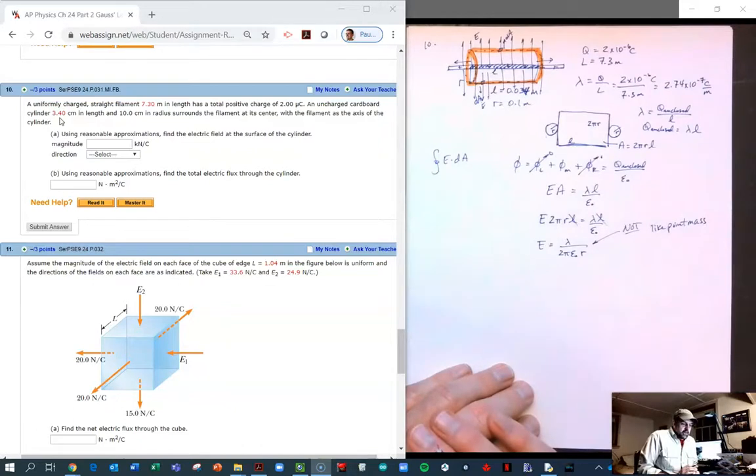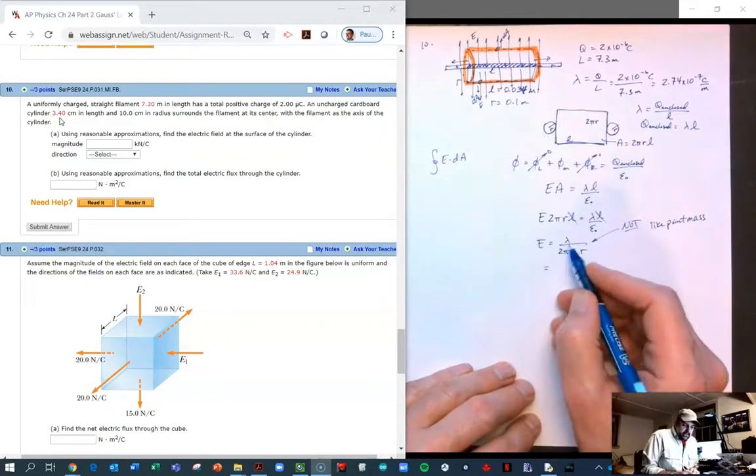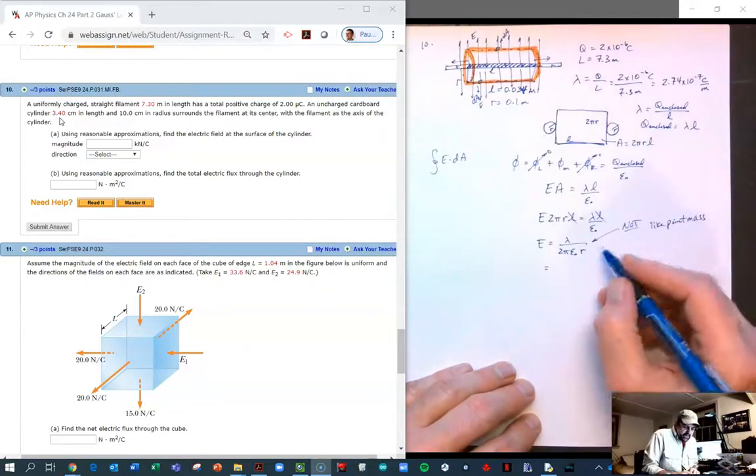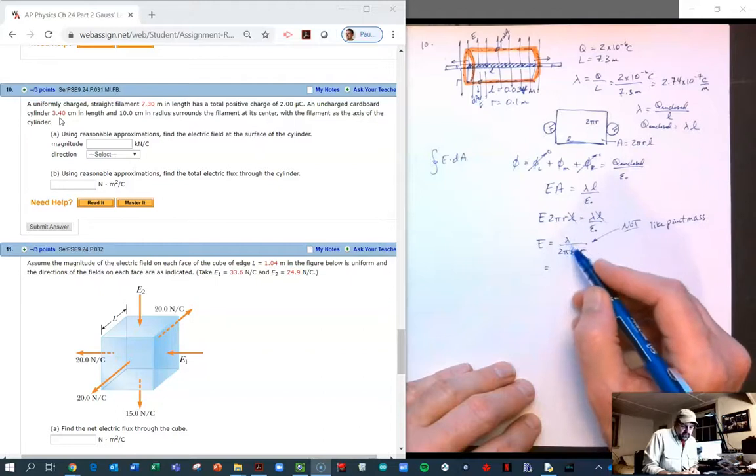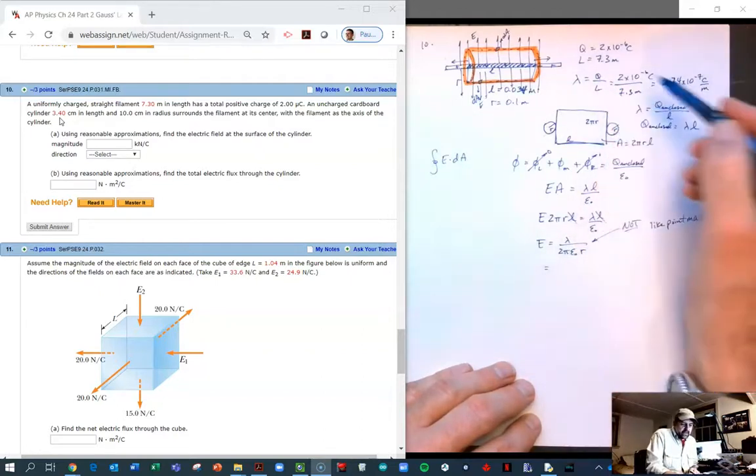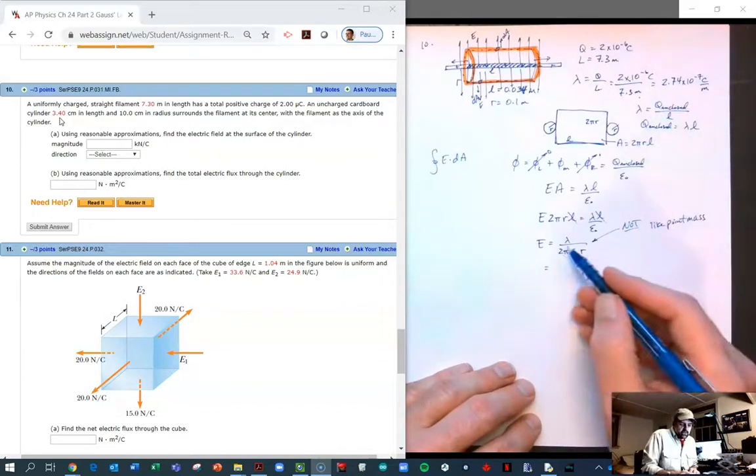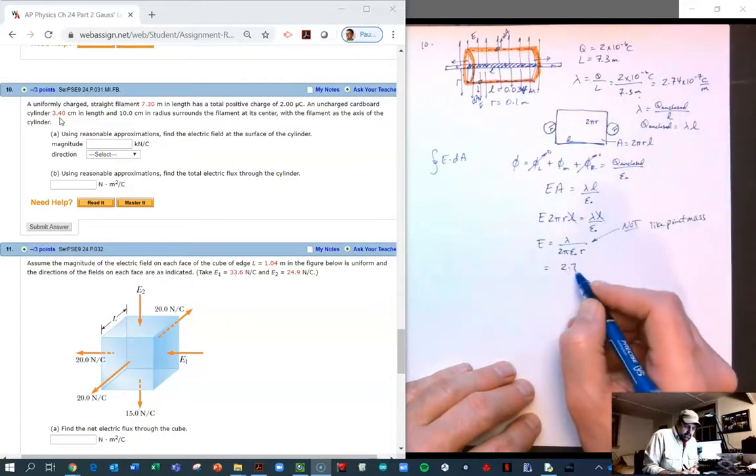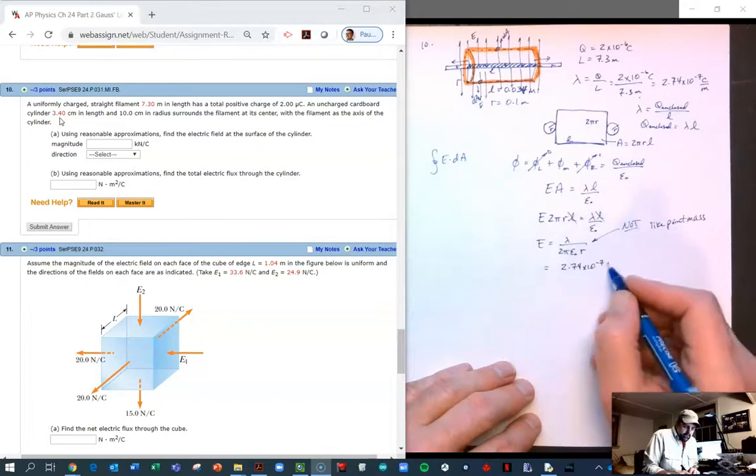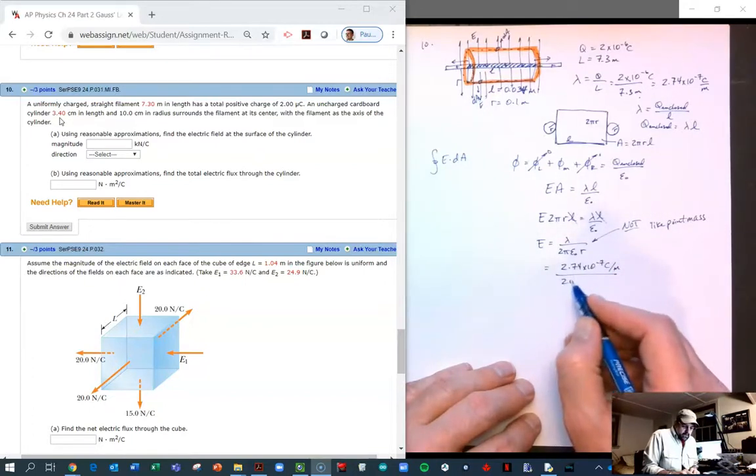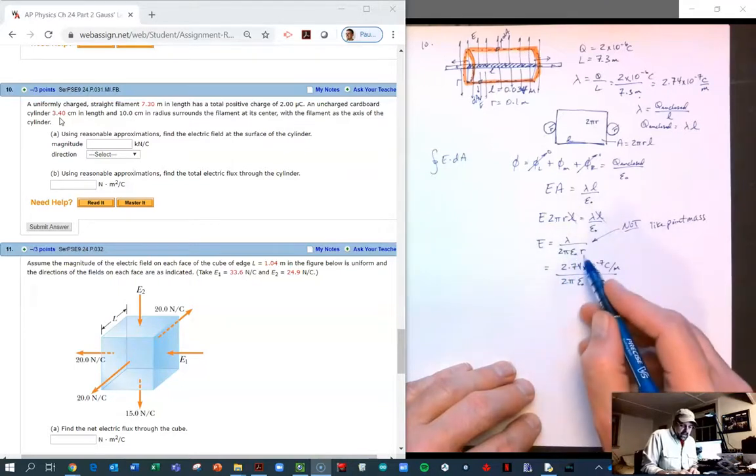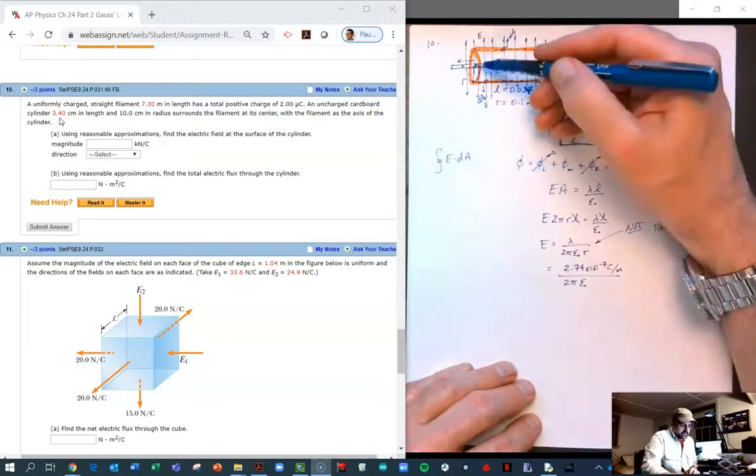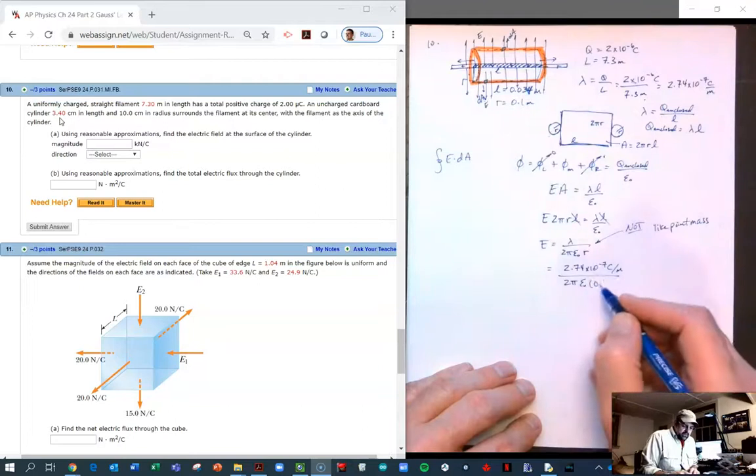All right, where are we? Ready to plug in. We know what lambda is—we calculated that earlier. If you didn't calculate that beforehand, all you have to do is realize that lambda is just Q over big L, and you know Q and you know L, so you know that value. Since we do know it, we can just write it in.